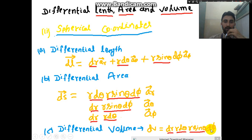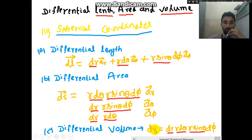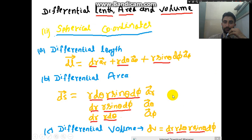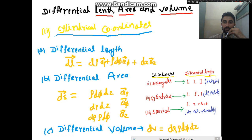That covers differential length, differential area, and differential volume in all three coordinate systems. Remember: dl (differential length) and dS (differential surface area) are vector quantities, but differential volume is not a vector — it is a scalar, being the dot product of all three components. The most important thing to remember is the multiplication factors: (1,1,1) for rectangular, (1, rho, 1) for cylindrical, and (1, r, r·sin(θ)) for spherical. Thank you!